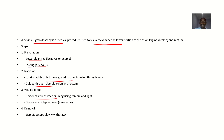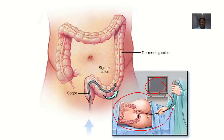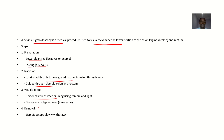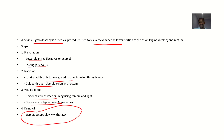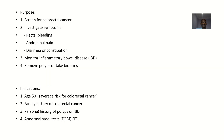Visualization: the doctor will examine the interior lining using a camera and light. The camera is at the tip of the scope, and as it is inserted you observe it on the screen. Biopsies and polyp removal can also be done. After the procedure is complete, the sigmoidoscopy is slowly withdrawn from the anus.